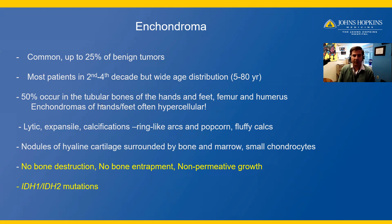Radiographs are important with hyaline cartilage neoplasms. Enchondromas are typically lytic and may show expansile growth. The calcifications are often ring-like — these little arcs — as well as popcorn-like fluffy calcifications are often seen.